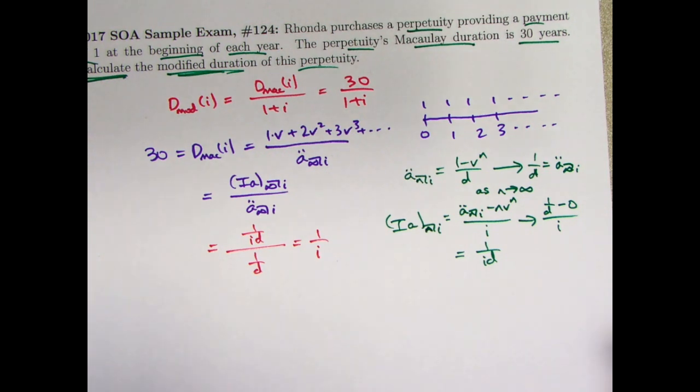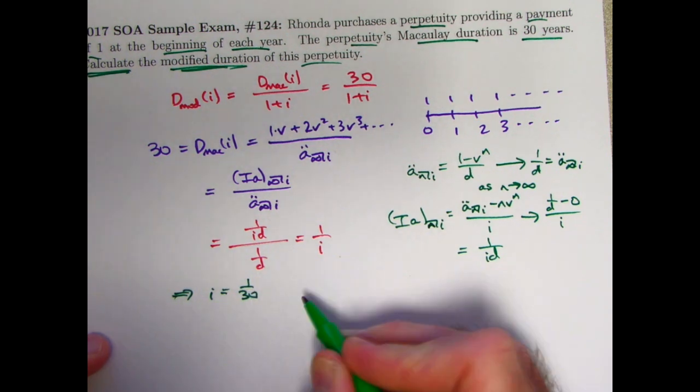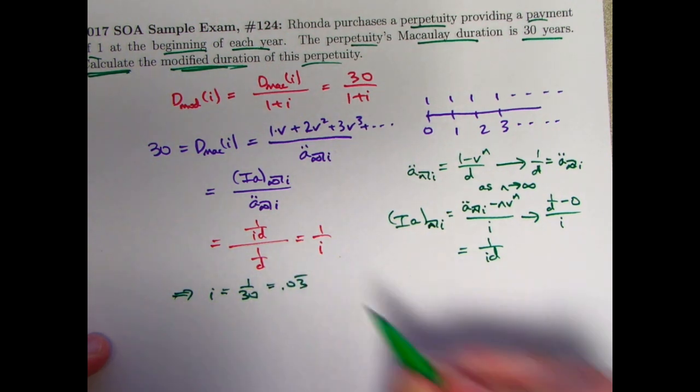And therefore, 30 is 1 over i. Therefore, i is 1 over 30, which would be 0.03 repeating.